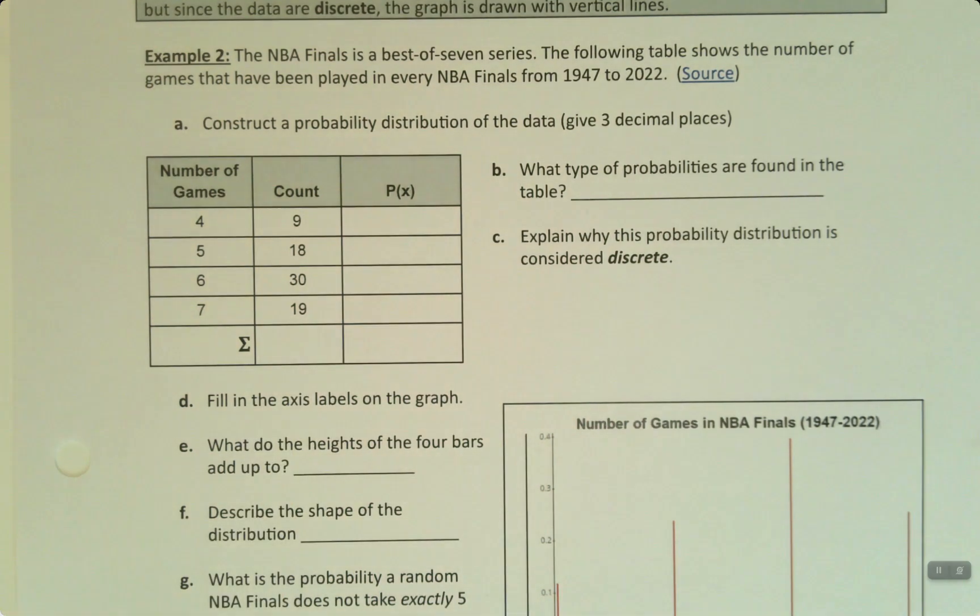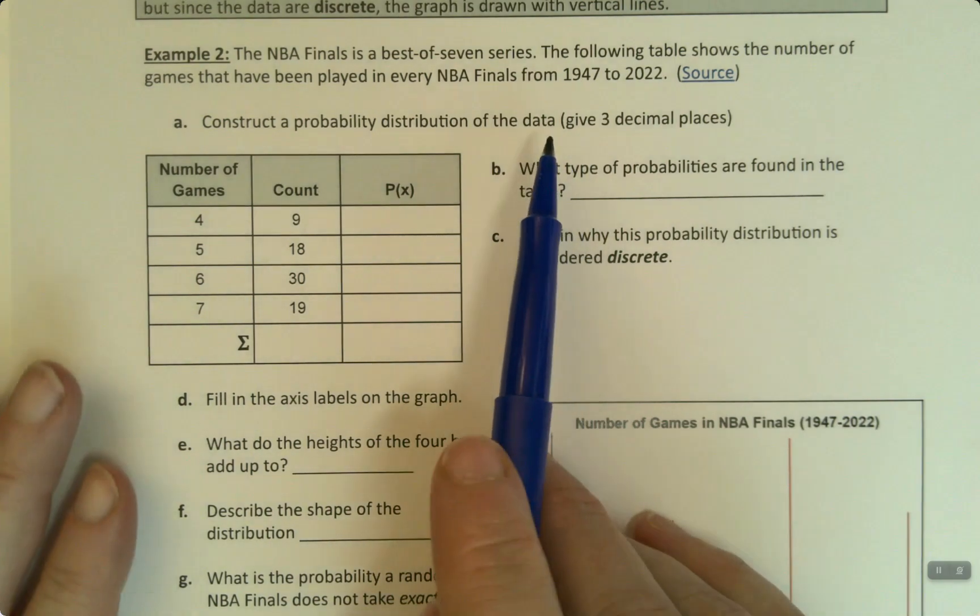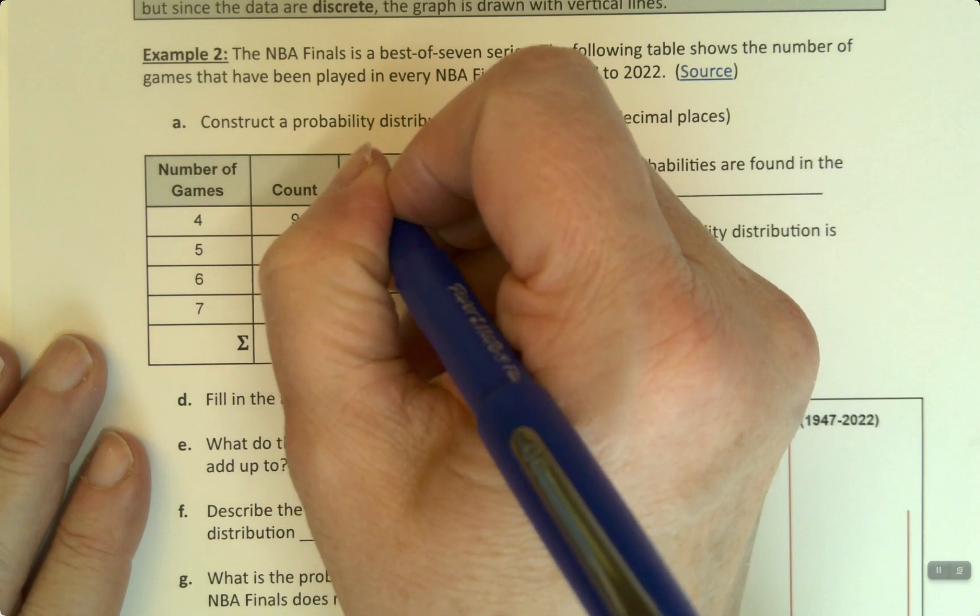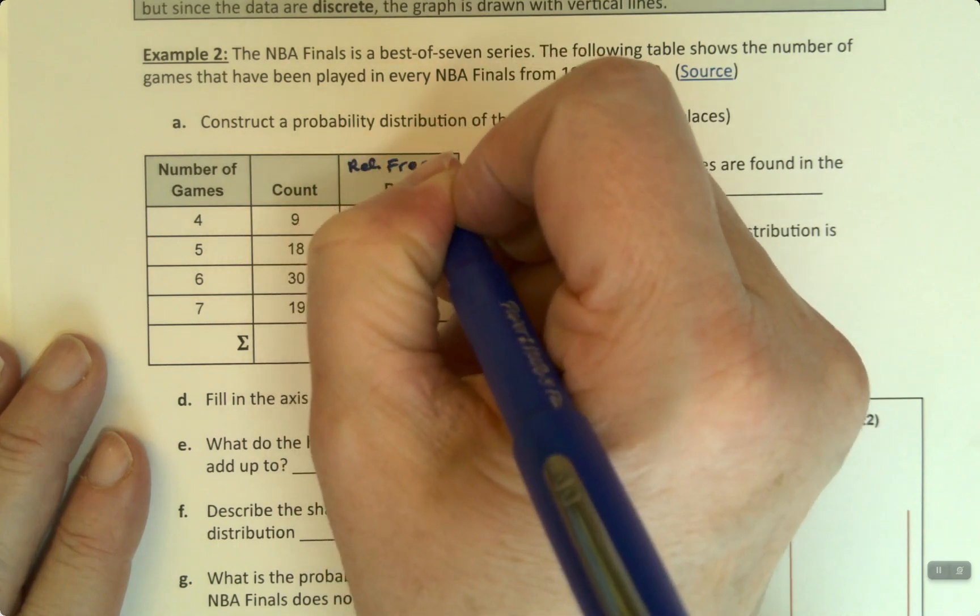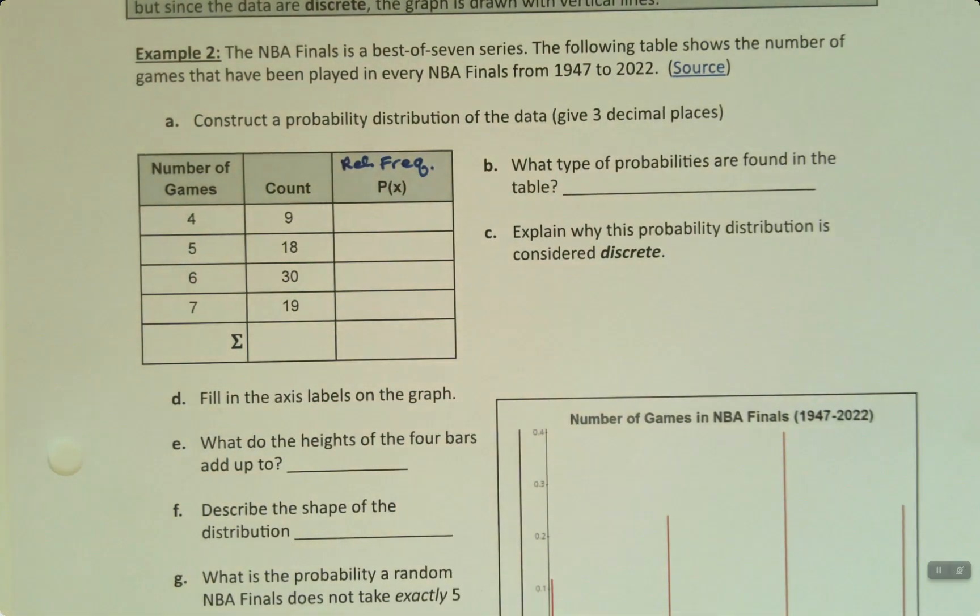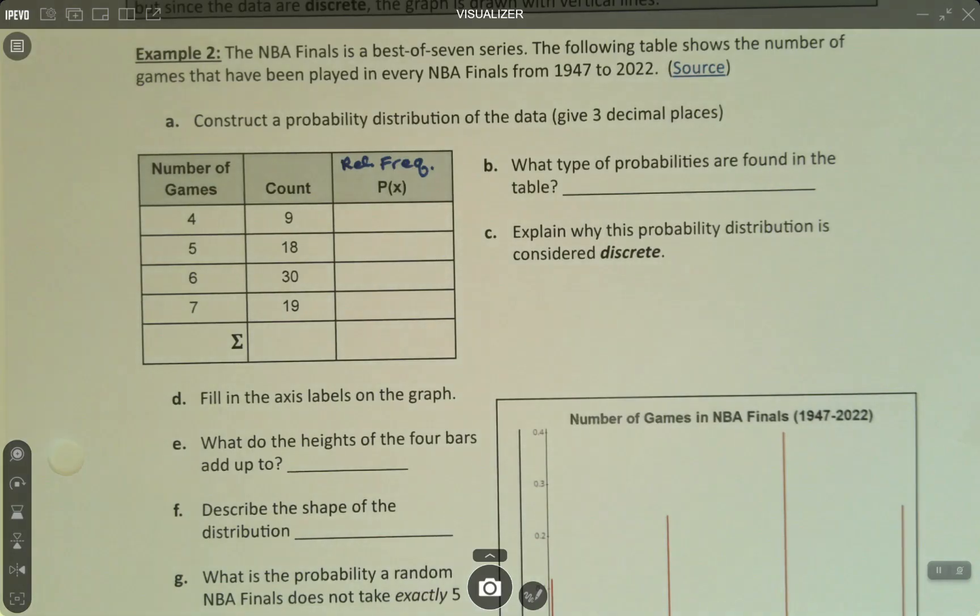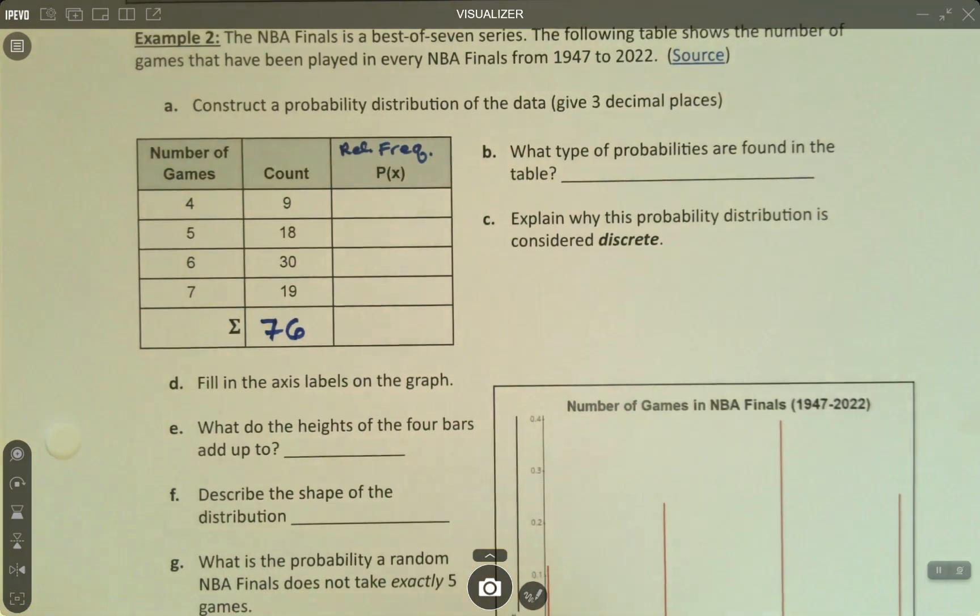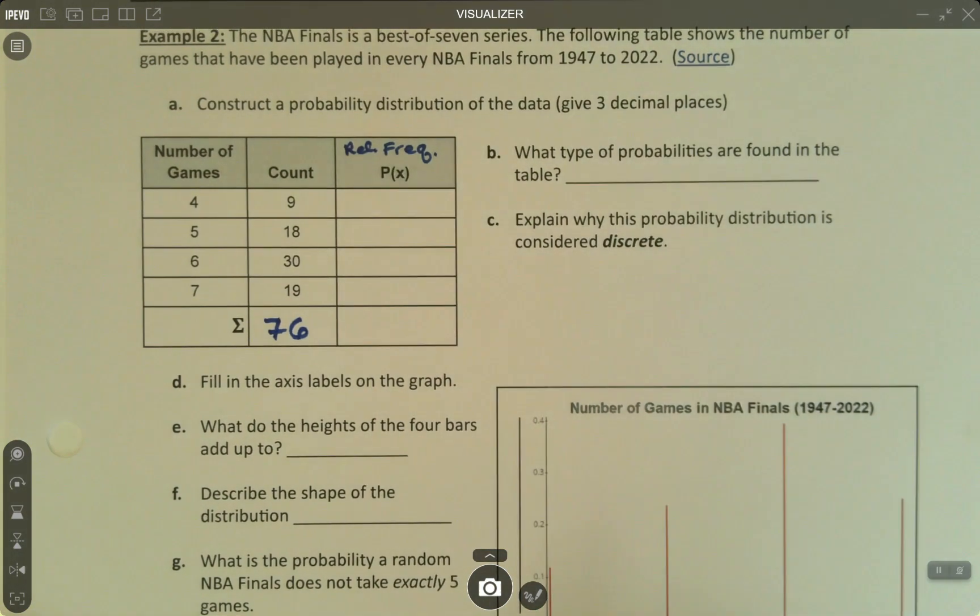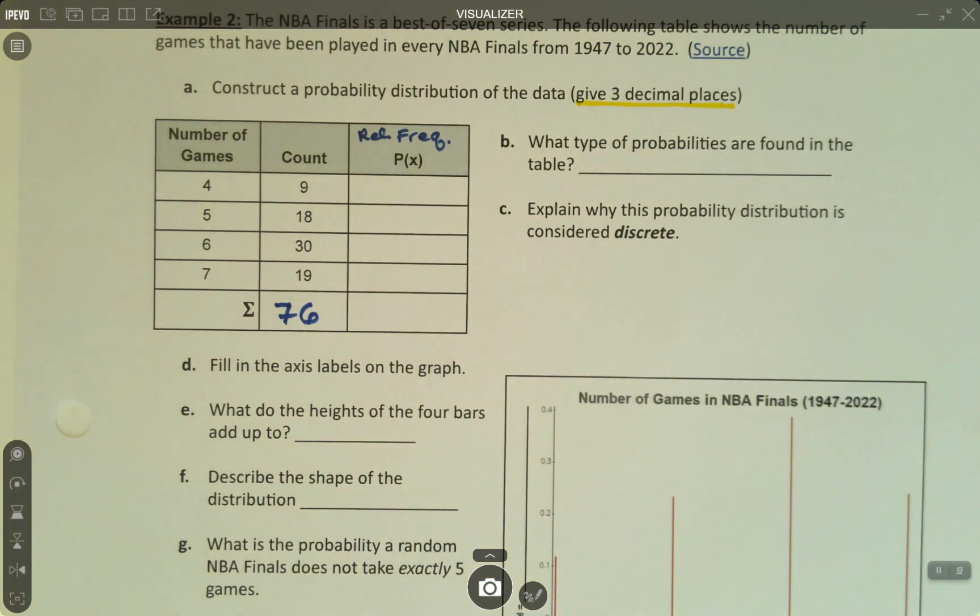Let's remind ourselves how to find these probabilities. We're going to construct a probability distribution of the data. The probabilities here would be the relative frequencies. We learned how to do this in section 5.1, though we learned this in chapter 2 but weren't connecting that it was a probability at the time. I'm going to add 9 plus 18 plus 30 plus 19, and I get a total of 76.